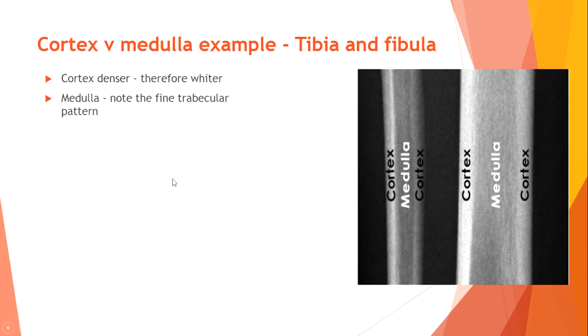Cortex and medullary example — tibia and fibula. The cortex is denser and whiter, while the medullary cavity is thinner and less dense.